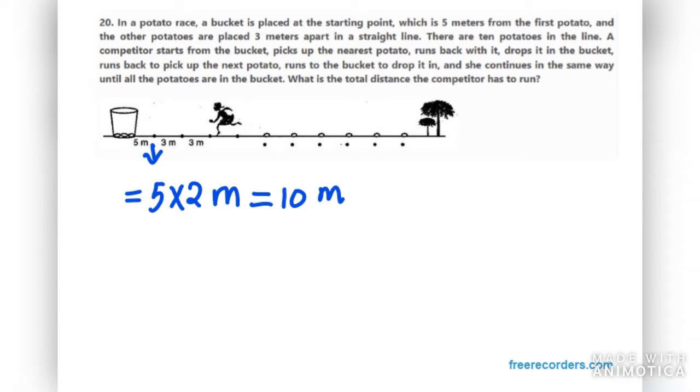Now distance of the second potato. You can see the total distance at one go is eight meters. If we do twice of eight meters, that will be sixteen. That means for the second one it will take sixteen meters to pick up the second potato and put it in the bucket again.